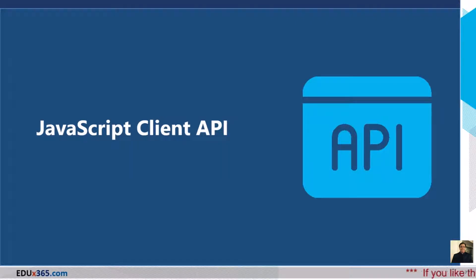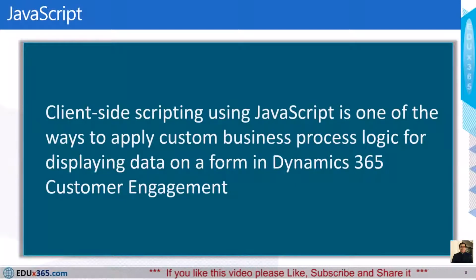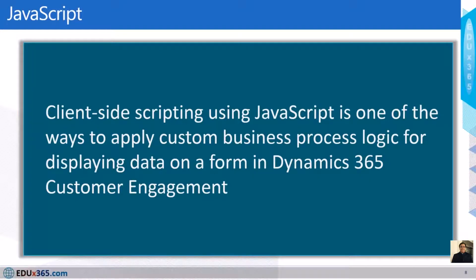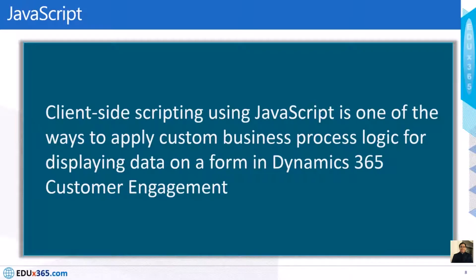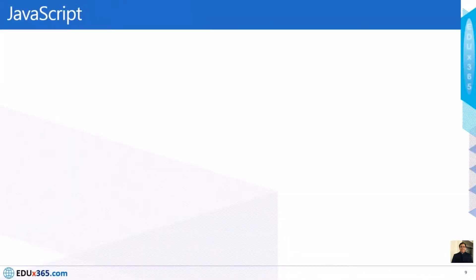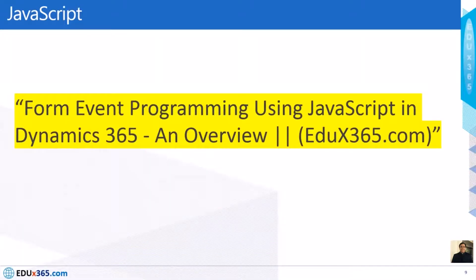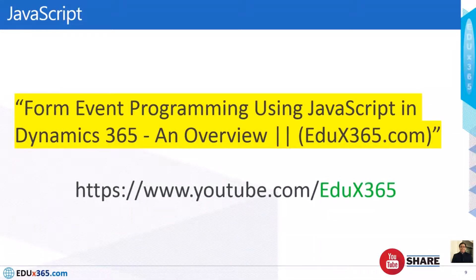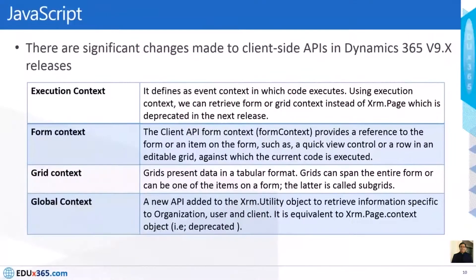Now let's discuss JavaScript client APIs. Client-side scripting using JavaScript is one of the ways to apply custom business process logic for displaying data on a form in Dynamics 365 Customer Engagement. There are significant changes made to the client-side APIs in Dynamics 365 version 9.x, which we will cover here.